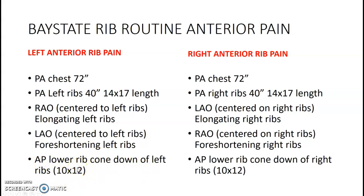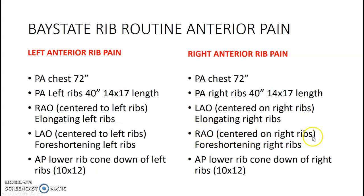For right anterior rib pain, flip-flop a few things. Again, PA chest at 72 inches, then move to 40 — don't forget that step. PA of the right (side of interest). LAO centered on the right side of the ribs elongates the right ribs. RAO centered on the right foreshortens the right. Then do an AP lower cone-down.